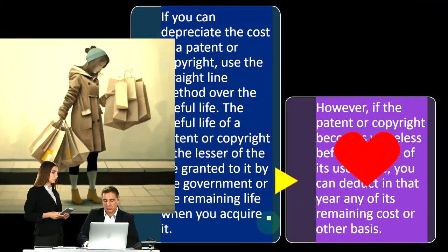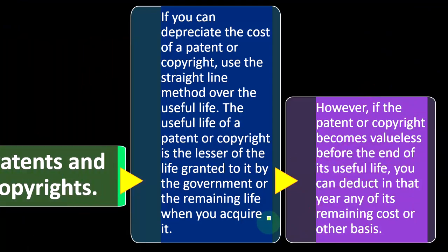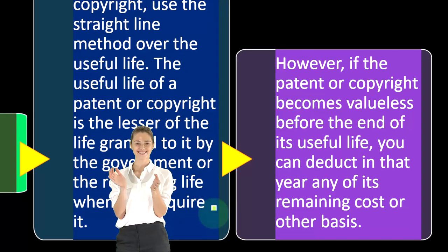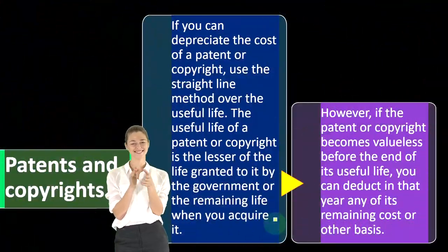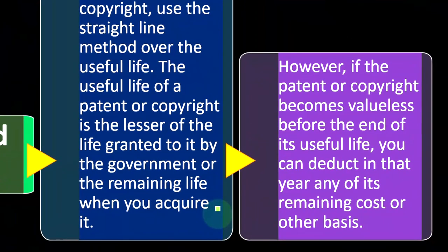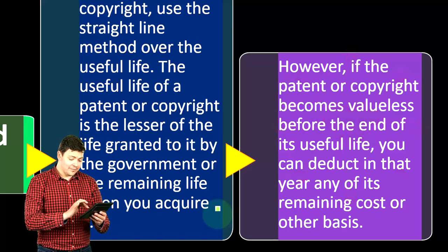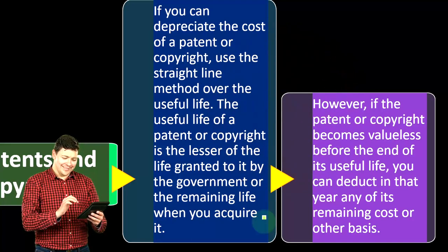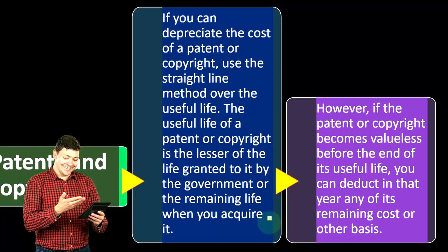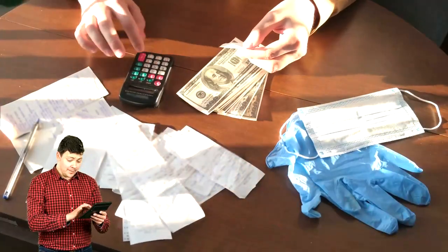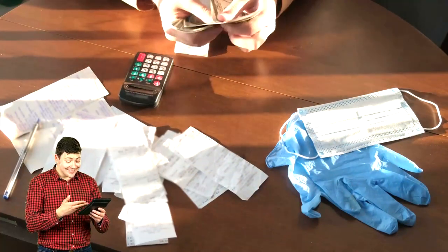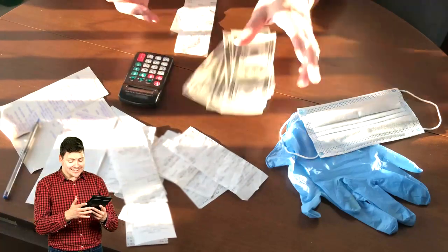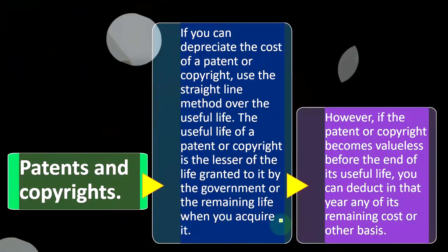However, if the patent or copyright becomes valueless before the end of its useful life, you can deduct in that year any of its remaining costs or other basis. This is similar to a situation where you had a piece of equipment you disposed of because it's no longer useful — you still have basis in it that you didn't fully depreciate. Similarly, if you have a patent or copyright that became obsolete and you're not getting any value from it anymore, but you still have basis that hasn't fully been depreciated, you'd get a benefit at the point in time it becomes obsolete, since you paid for it in the past and you're no longer allocating that cost to revenue in the future.